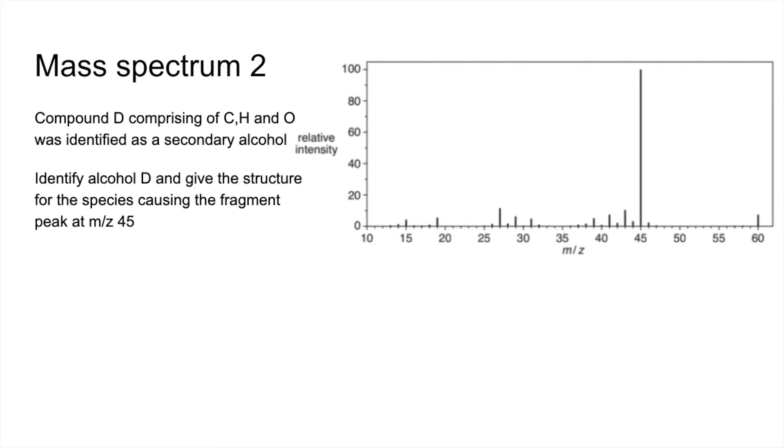Moving on to the second one now. We've got compound D comprises of C, H and O, and it's been identified as a secondary alcohol. So the carbon with the OH group on has got two carbons directly attached to it. And we've got to identify alcohol D, give the structure for the species causing the fragment peak of m/z 45.